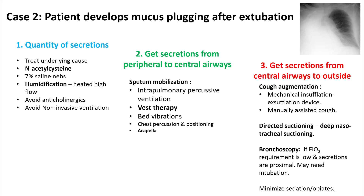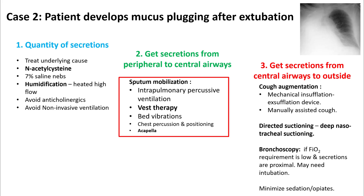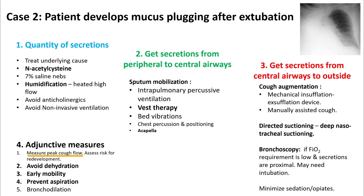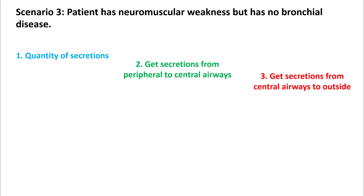Remember the secretions that are much more distal are possibly still present after bronchoscopy. So perform sputum mobilization techniques with VEST therapy, bed vibration, chest percussion, Acapella, and if available, intrapulmonary percussive ventilation. Use adjunctive measures. Measure peak cough flow to assess the risk of redevelopment of mucus plugging. Avoid dehydration. Early mobility is beneficial, and take steps to prevent aspiration.